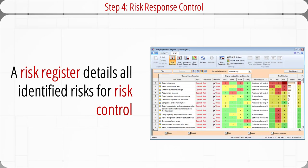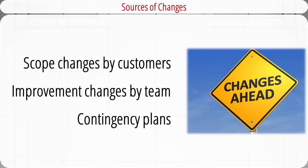The results of the first three steps of the risk management process are summarized in a formal document called the risk register. A risk register details all identified risks, including descriptions, category, probability of occurring, impact, responses, contingent plans, owners, and current status. The risk register will be used in the last step — risk control — which involves executing the risk response strategy, monitoring triggering events, initiating contingent plans, and watching for new risks. Establishing a change management system is an essential element of risk control. Changes come from many sources such as the customer, project manager, team members, and the occurrence of risk events. Most changes fall into three categories: scope changes such as redesigns or new features requested by the customer; improvement changes suggested by project team members; and implementation of contingent plans after a risk event occurred.